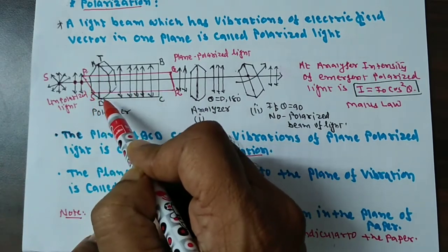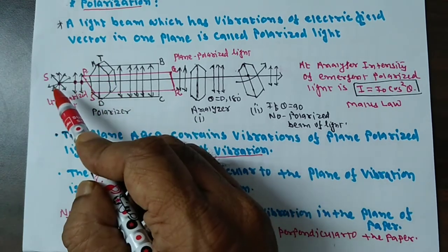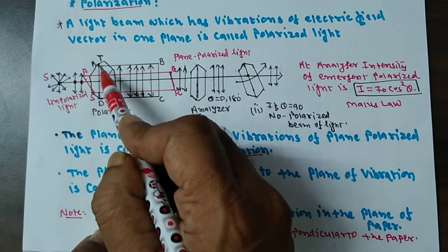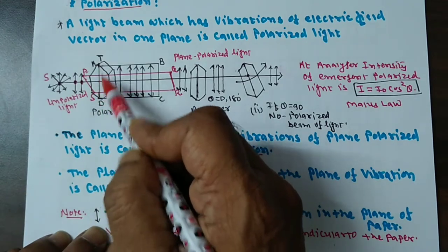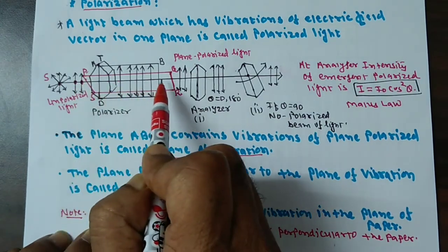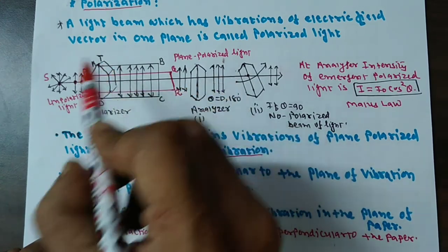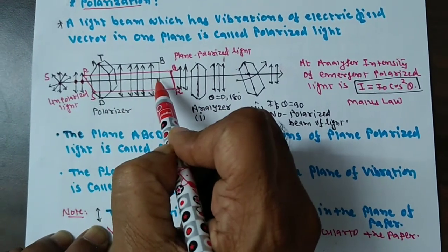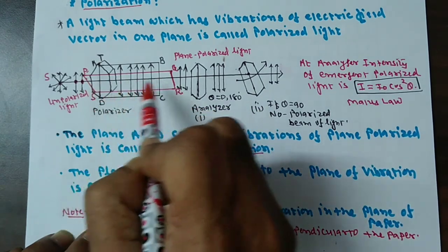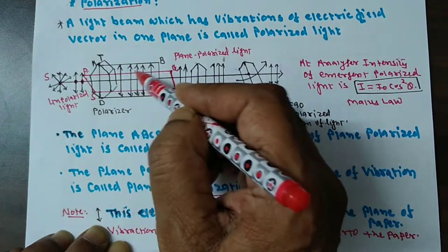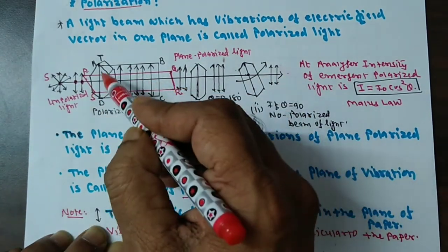This one is a tourmaline plate. When the beam of light is incident on this tourmaline plate, the electric field vector is vibrating in all directions. This one is the optic axis or crystalline axis of the tourmaline plate. Only those electric field vectors which are parallel to the optic axis pass through this tourmaline plate. So the vertical vibrations of the electric field vector pass through this tourmaline plate. The output electric field vectors remain parallel to each other and perpendicular to the direction of wave propagation. In this way, we produce plane polarized light with the help of a tourmaline plate.